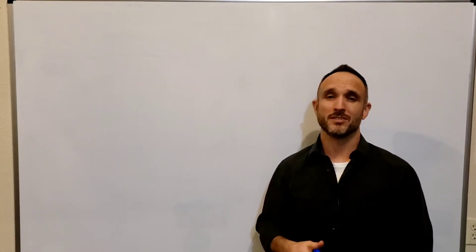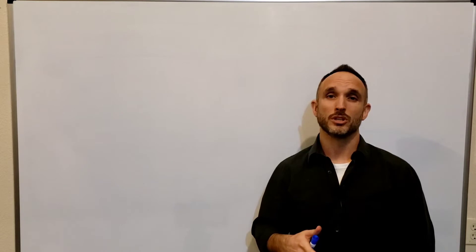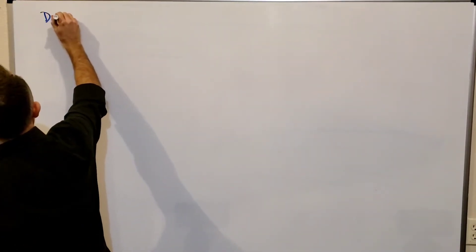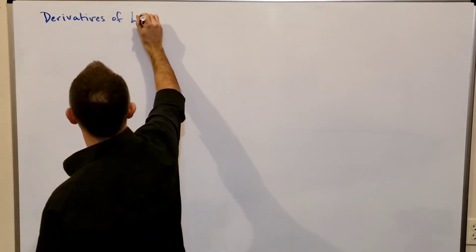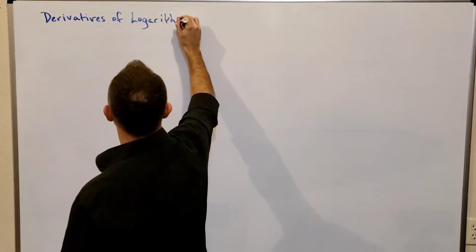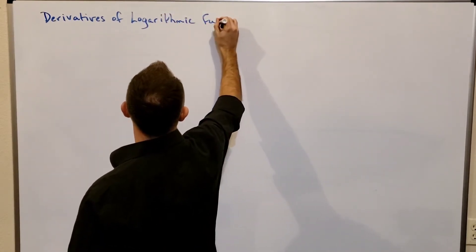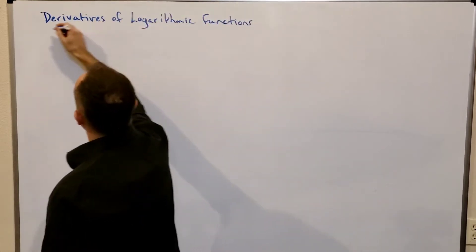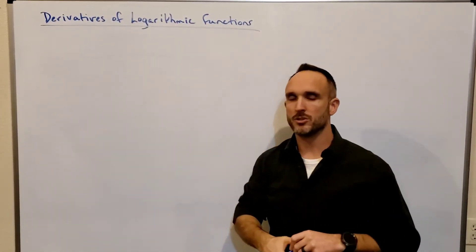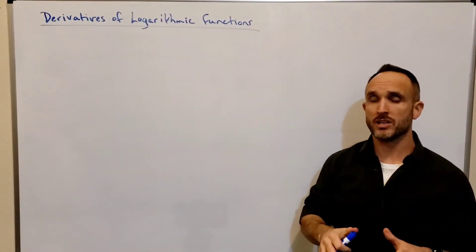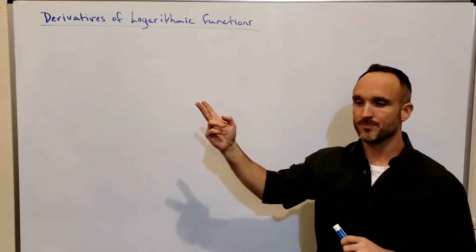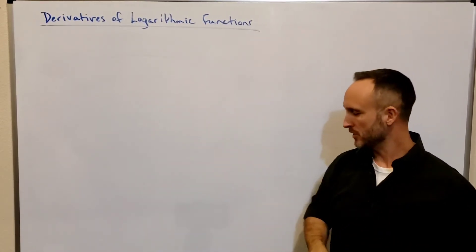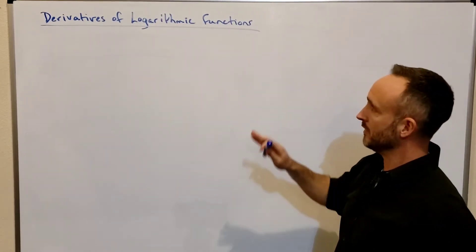Now we take what we know about implicit differentiation to look at the derivatives of logarithmic functions. The process here is similar to the derivatives of inverse trig functions. We're going to begin with the inverse of a logarithmic function and then work towards implicit differentiation to get the derivative of the log function.